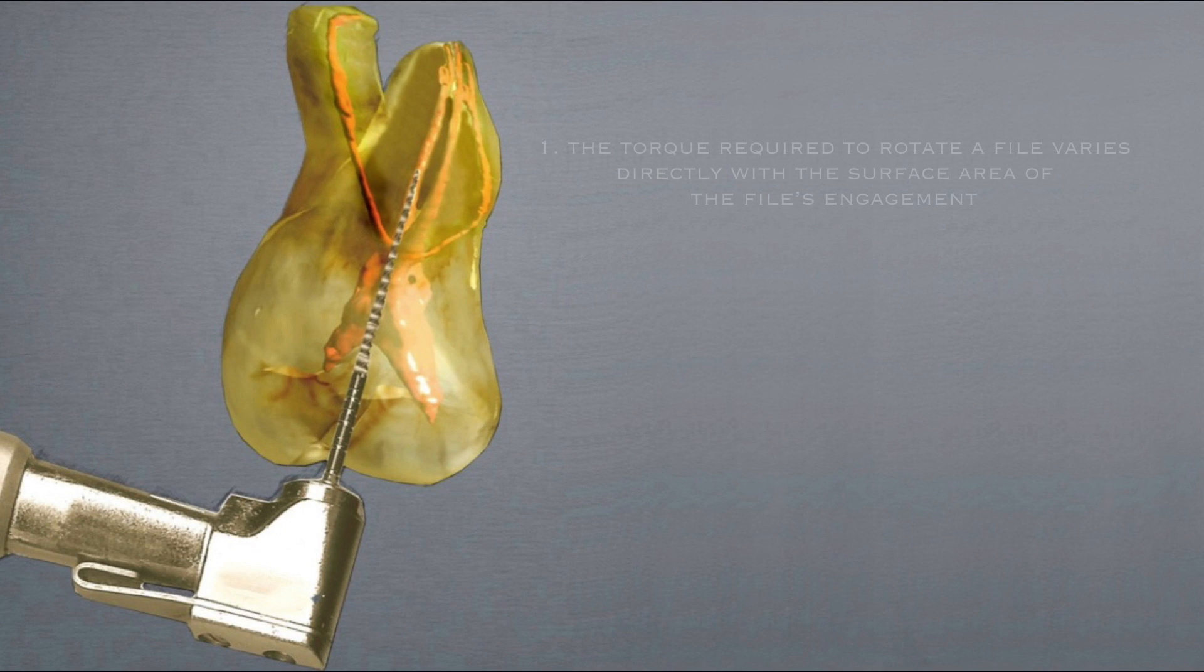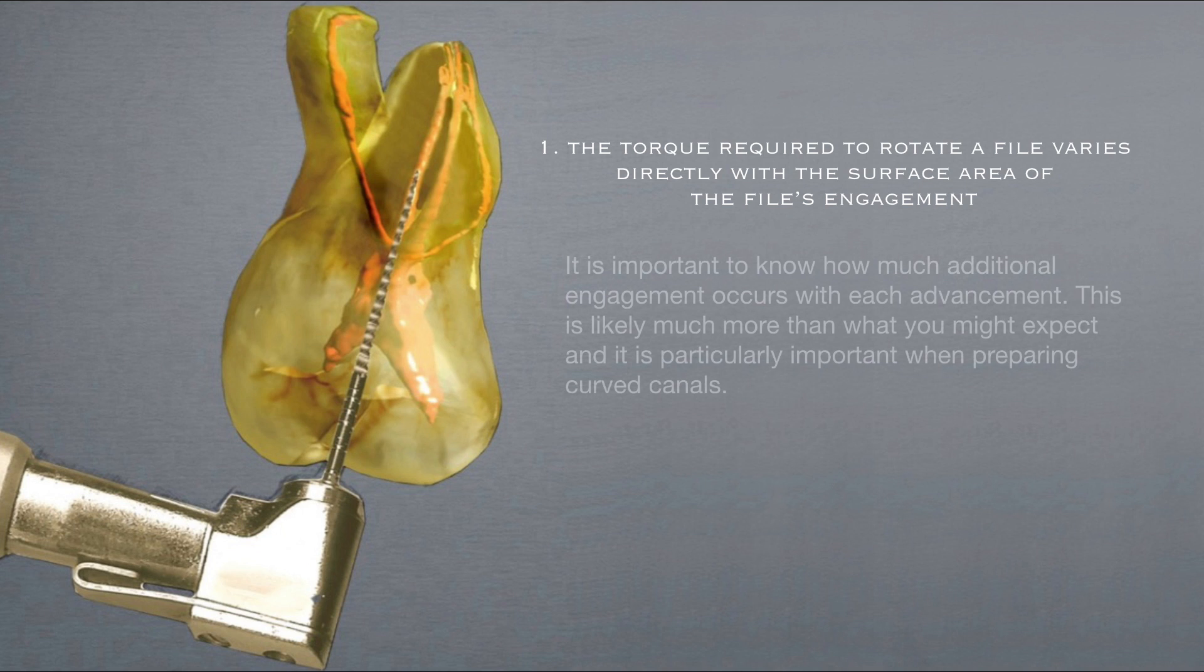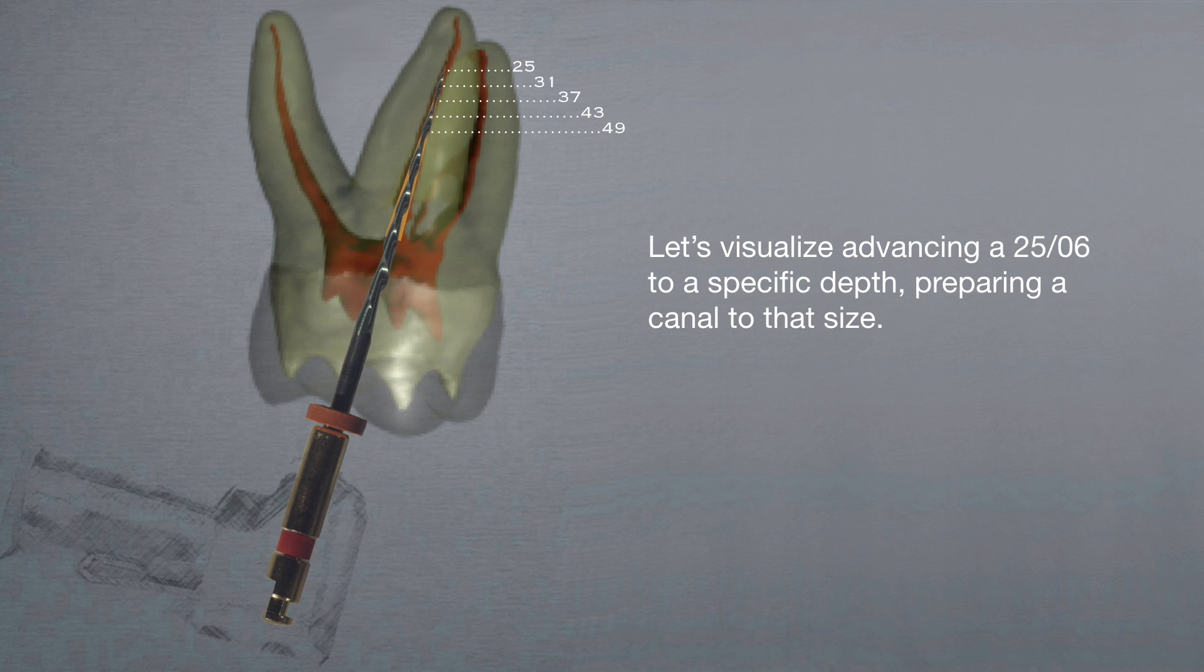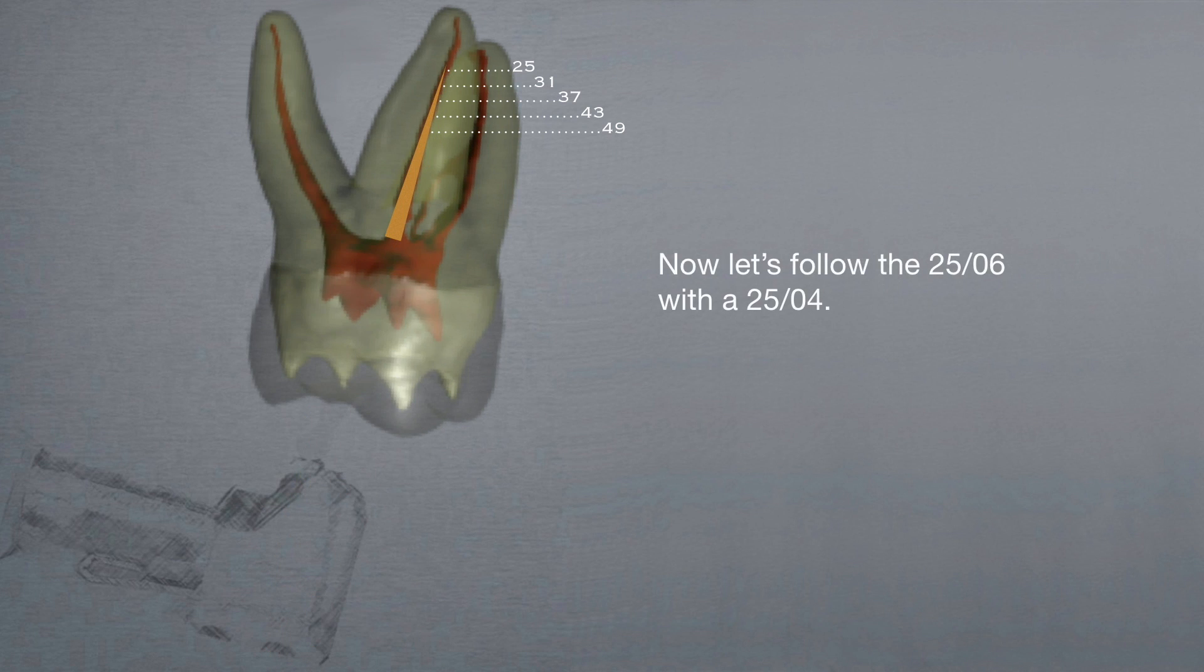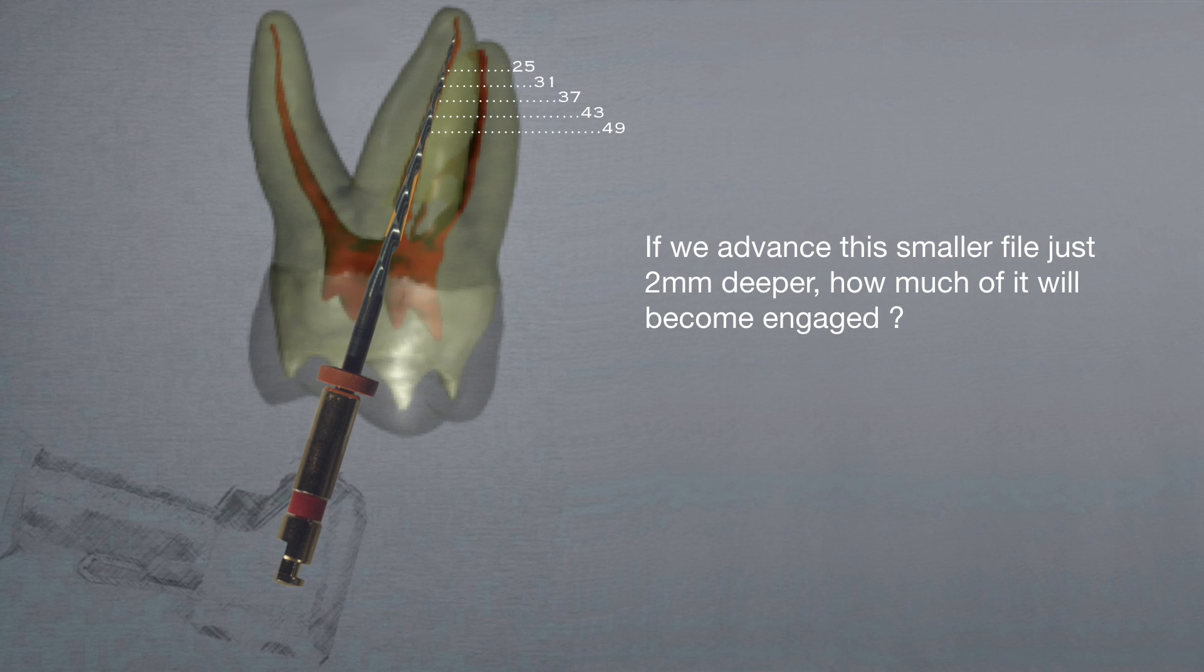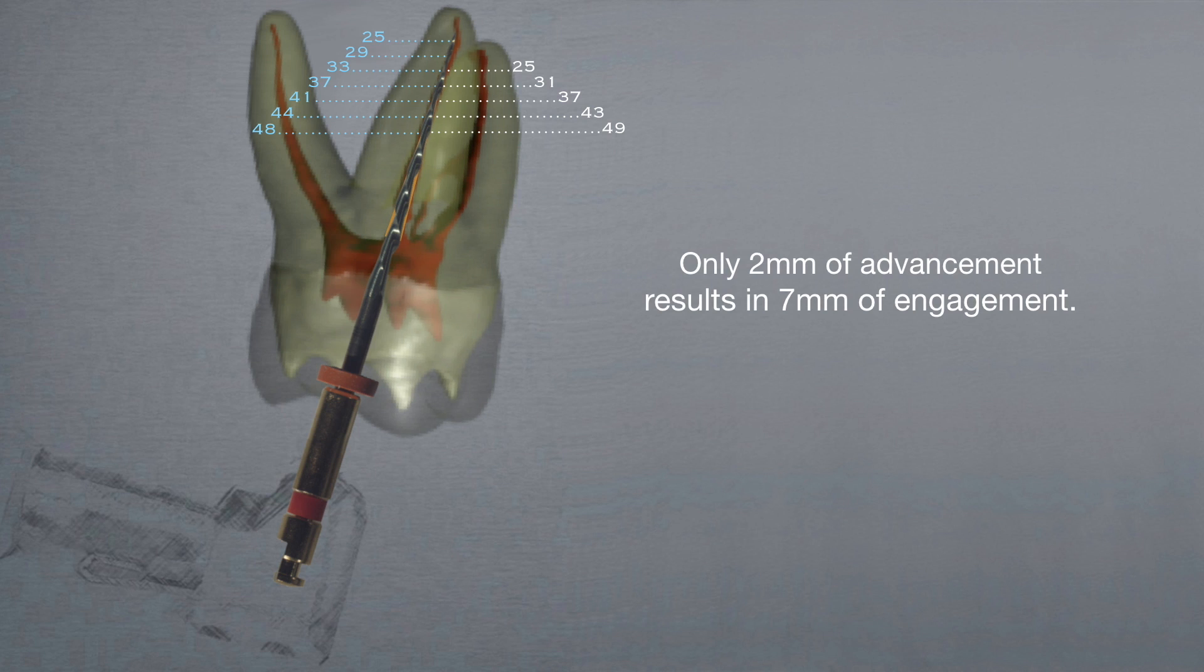Let's examine the first relationship. The torque required to rotate a file varies directly with the surface area of the file's engagement. It's important to know how much additional engagement occurs with each advancement. This is likely much more than what you might expect, and it's particularly important when preparing curved canals. Let's visualize advancing a 2506 to a specific depth, preparing a canal to that size. Now let's follow the 2506 with a 2504. If we advance this smaller file just 2mm deeper, how much of it will become engaged? Only 2mm of advancement results in 7mm of engagement.